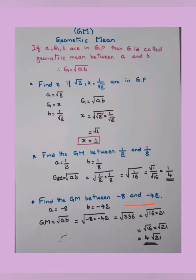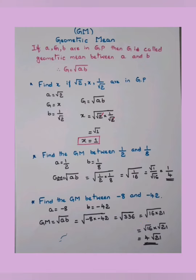Next, find the GM between −8 and −42. Here a = −8 and b = −42. Substituting: GM = √(−8 × −42). Negative times negative gives positive: √(8 × 42) = √336. To simplify, we can write 336 = 16 × 21, so √336 = √16 × √21 = 4√21. This simplification comes with practice.